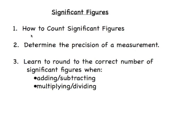There are basically three parts. First, how to count significant figures. Second, to determine the precision of a measurement — you've done that a little bit already when you've calculated uncertainty. And then third, which is the most important part, is learning how to round to the correct number of significant figures when you add or subtract, and then finally when multiplying and dividing.